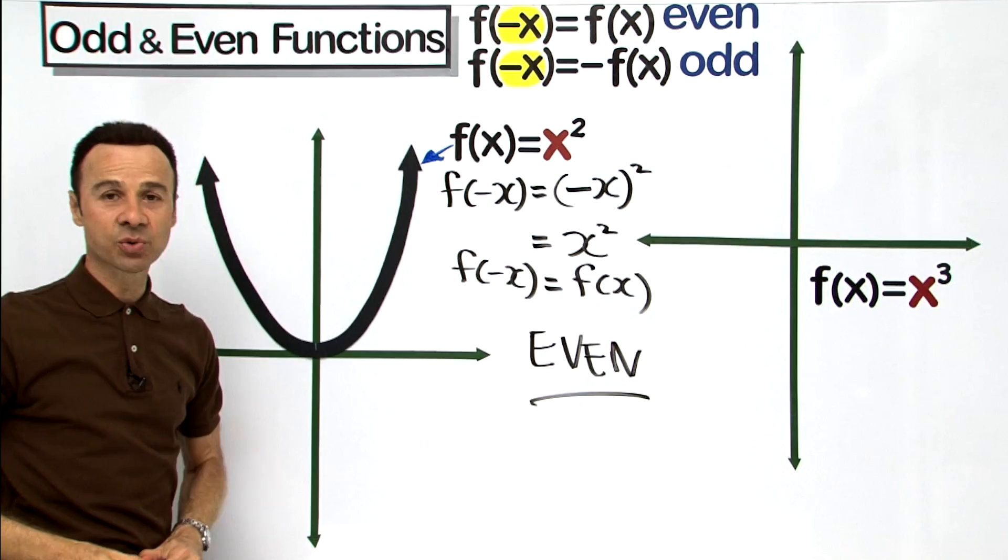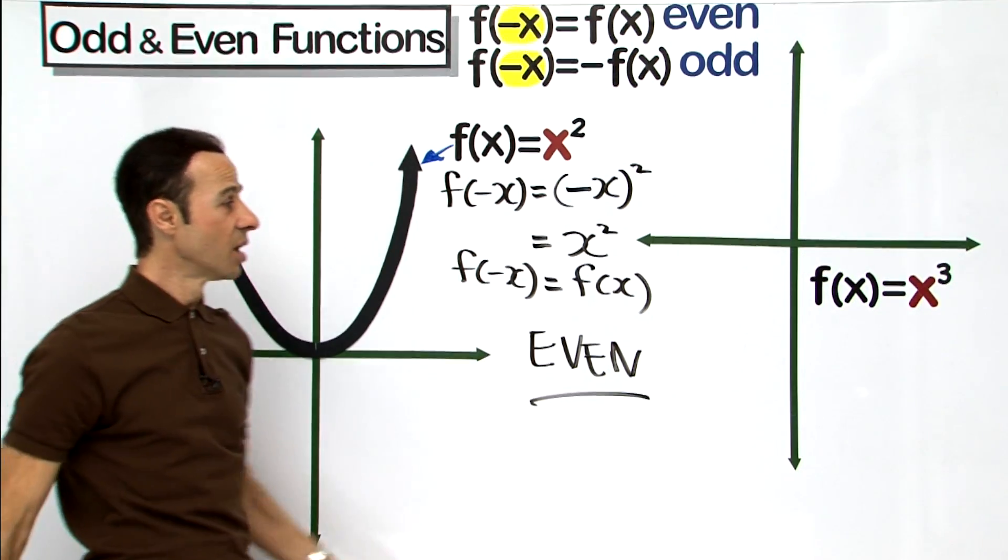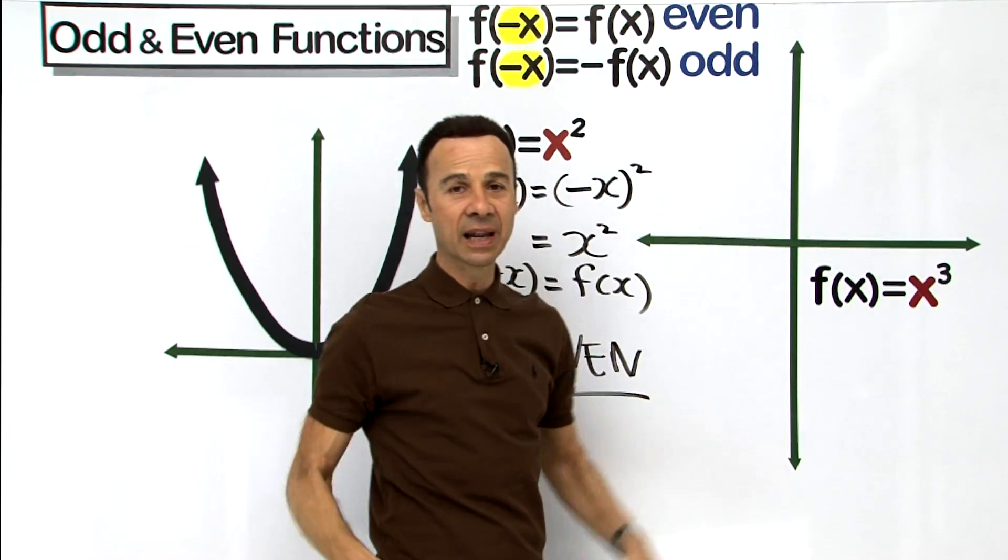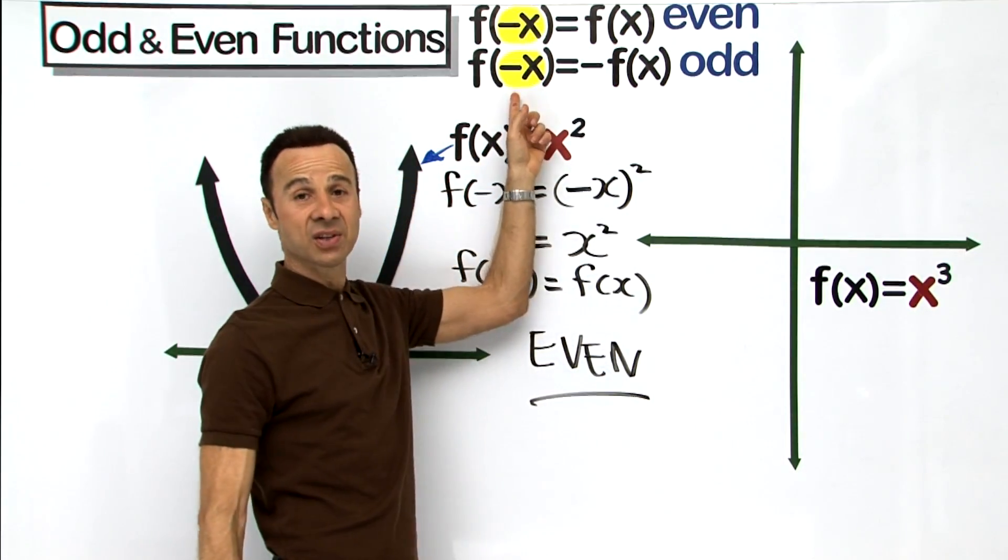Let's go to the next one, the next function which is f(x) equals x cubed. Odd or even? Let's find out, let's put in the negative x in there and find out.